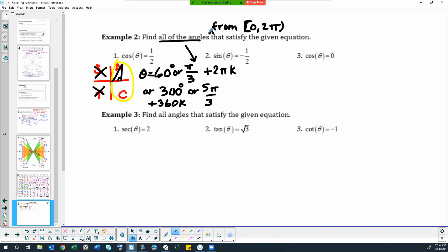If you're doing all of the angles from zero to two pi, then you wouldn't worry about the k and the answers would just be 60 and 300 or pi thirds and five pi thirds. I don't know if that made sense or not. Lots of little details there to keep in mind. Okay, let's look at number two, sine is negative one half.